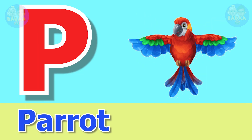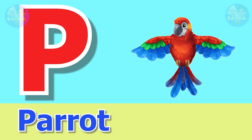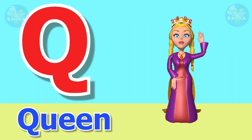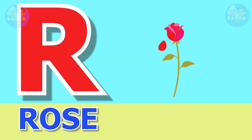P for parrot, parrot means tota. Q for queen, queen means nani. R for rose, rose means gulab.